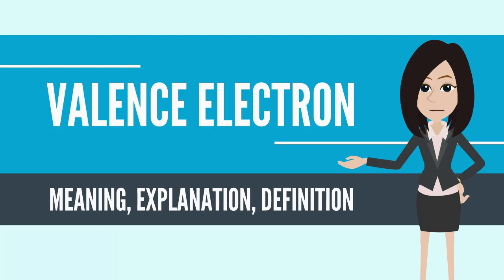In a single covalent bond, both atoms in the bond contribute one valence electron in order to form a shared pair. The presence of valence electrons can determine the element's chemical properties, such as its valence — whether it may bond with other elements and, if so, how readily and with how many.